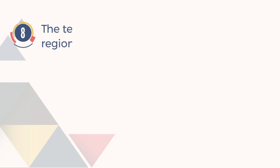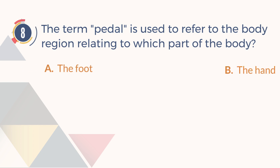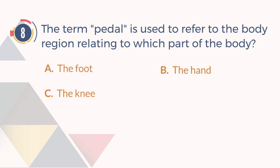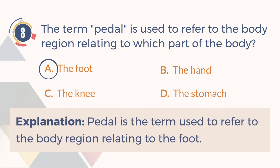Number 8. The term pedal is used to refer to the body region relating to which part of the body? A. The foot. B. The hand. C. The knee. D. The stomach. The answer is A. The foot. Explanation: Pedal is the term used to refer to the body region relating to the foot.